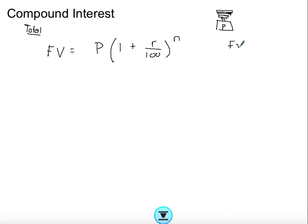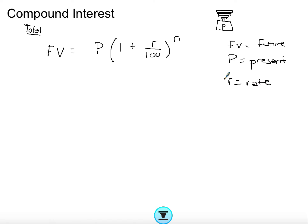Just to recap on notation: the future value is what you end with; P is the present value, which is what you start with; r is the rate — note that you'll always need to divide by 100 whatever notation or formula you use; and n is the number of years.